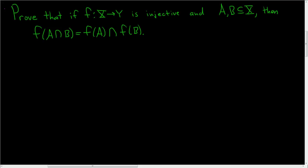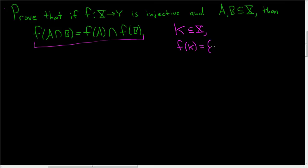Prove that if F is injective and A and B are subsets of X, that we have the following equality of sets. If you don't know what this notation means, for a subset, say K, of capital X, we can look at F of K. This is equal to the set of all of the Ys in capital Y such that Y is equal to F of little k for little k in capital K.